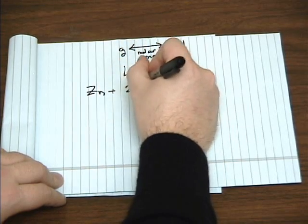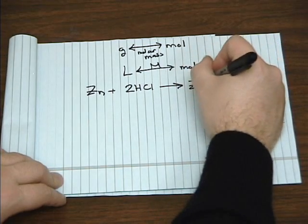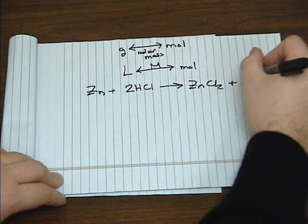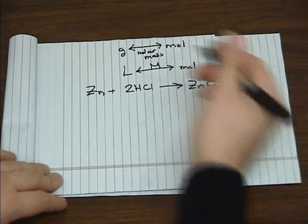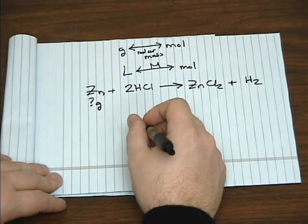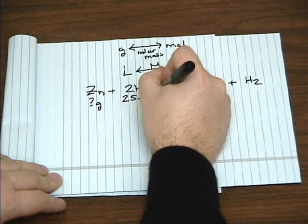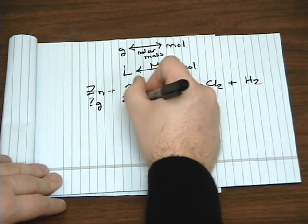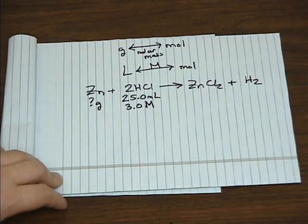So let's look at a stoichiometry problem that involves the molarity unit. We'll use the reaction between zinc and hydrochloric acid to give zinc chloride and hydrogen gas. Let's try to figure out how many grams of zinc you can get from 25 milliliters of a 3 molar solution of hydrochloric acid.